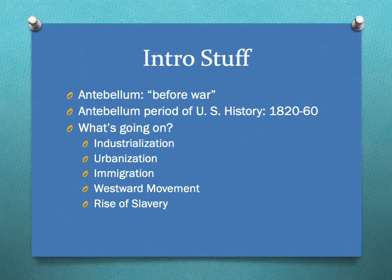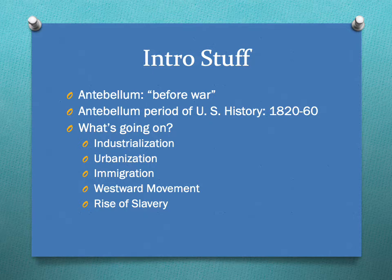Urbanization — the moving of people from the country into towns. Immigration. In this period our immigration is still primarily Western European: English, Irish, and some German and French. It'll be after the Civil War that you get the big Eastern European and Russian immigration, and not until the 20th century, really, will you get any significant Asian immigration.